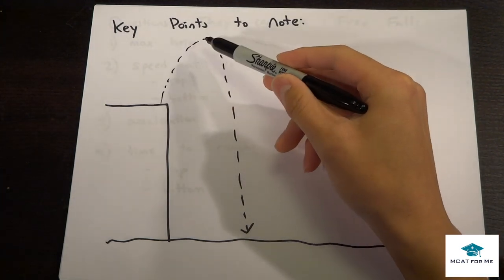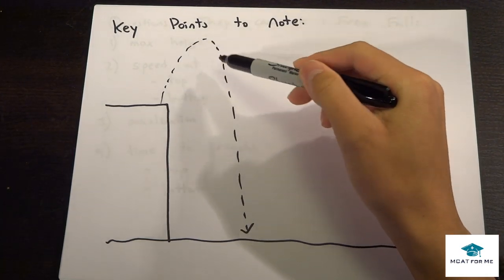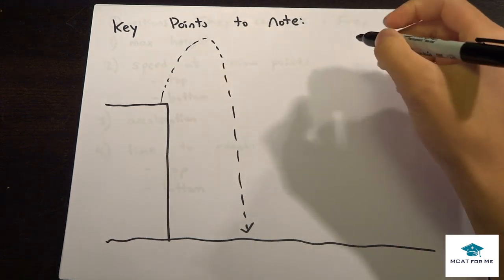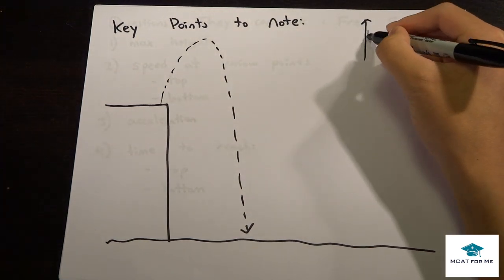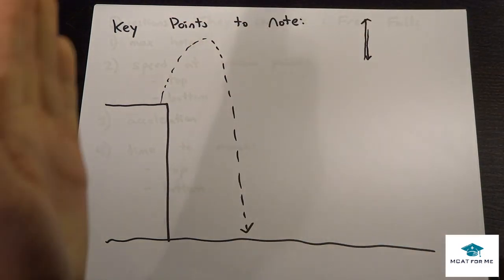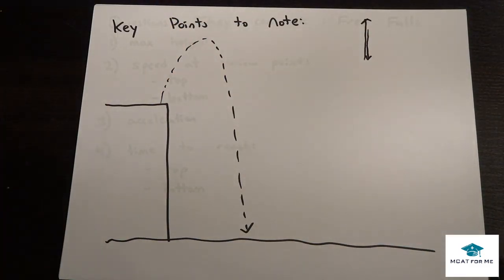First off, I drew it like this at an angle but this is not a projectile. This is the same as if I just drew it straight up and it comes back straight down, but it's just hard for me to draw it on a straight line for you guys to see anything. Don't think it's a projectile motion question, it's just free fall.